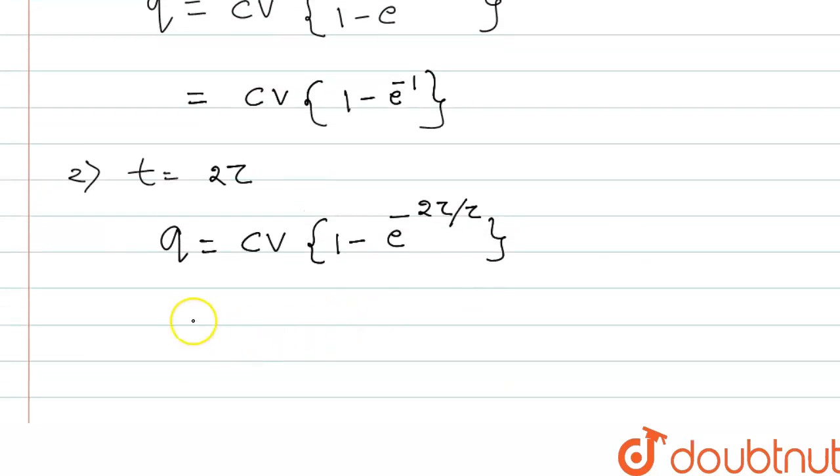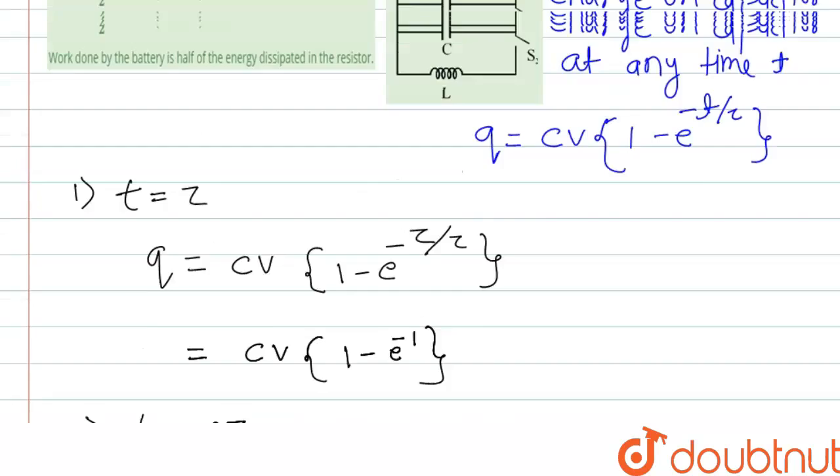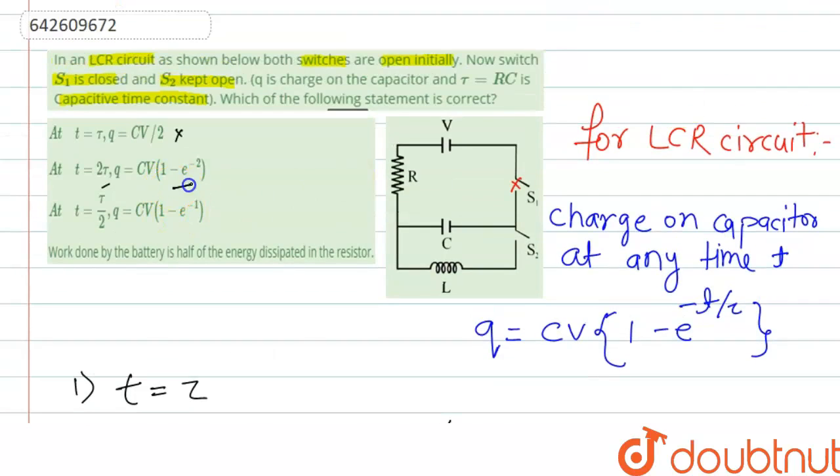So this equation will become CV 1 minus e to the power minus 2. So if we check the option, this is the required equation and we got it.